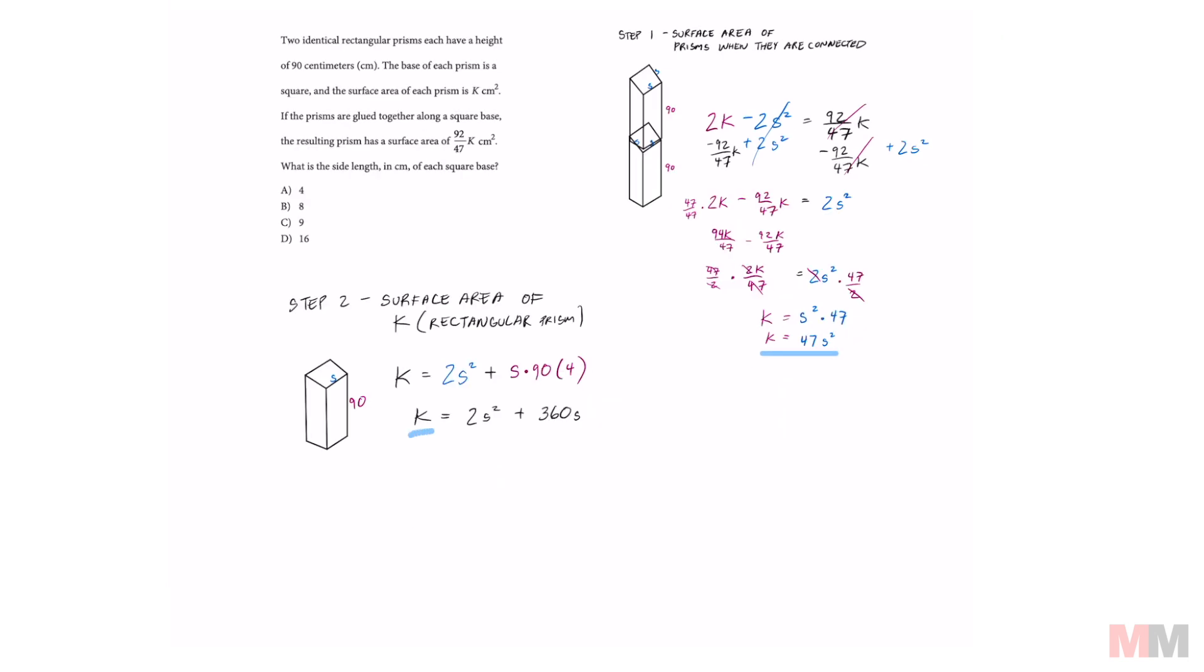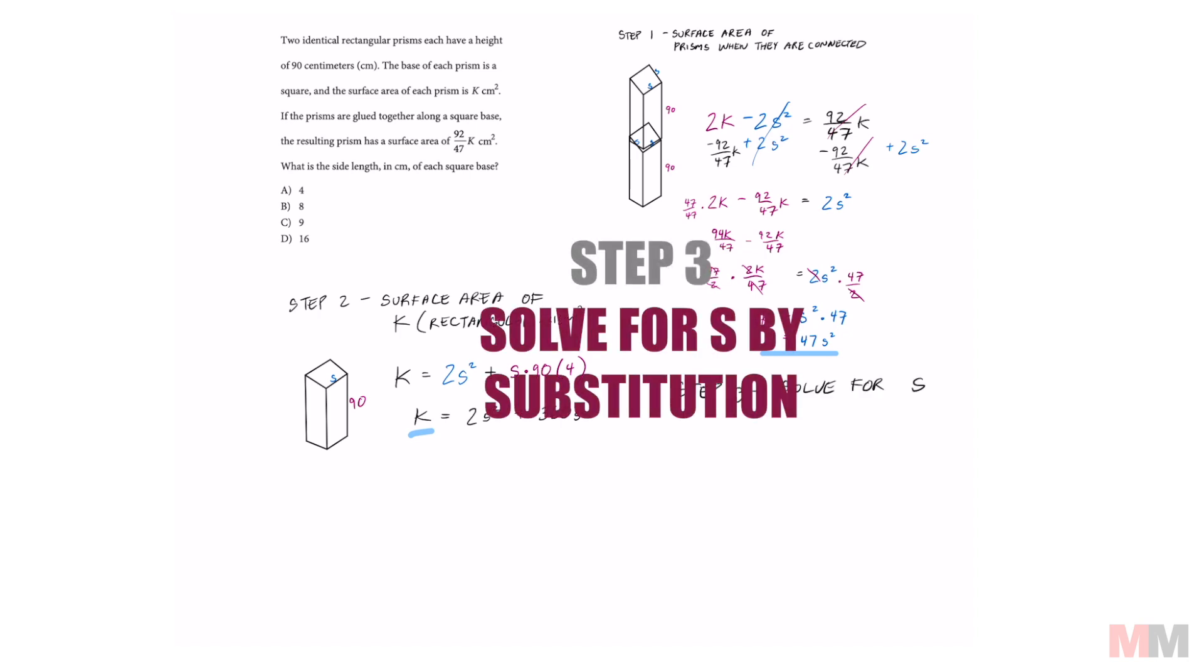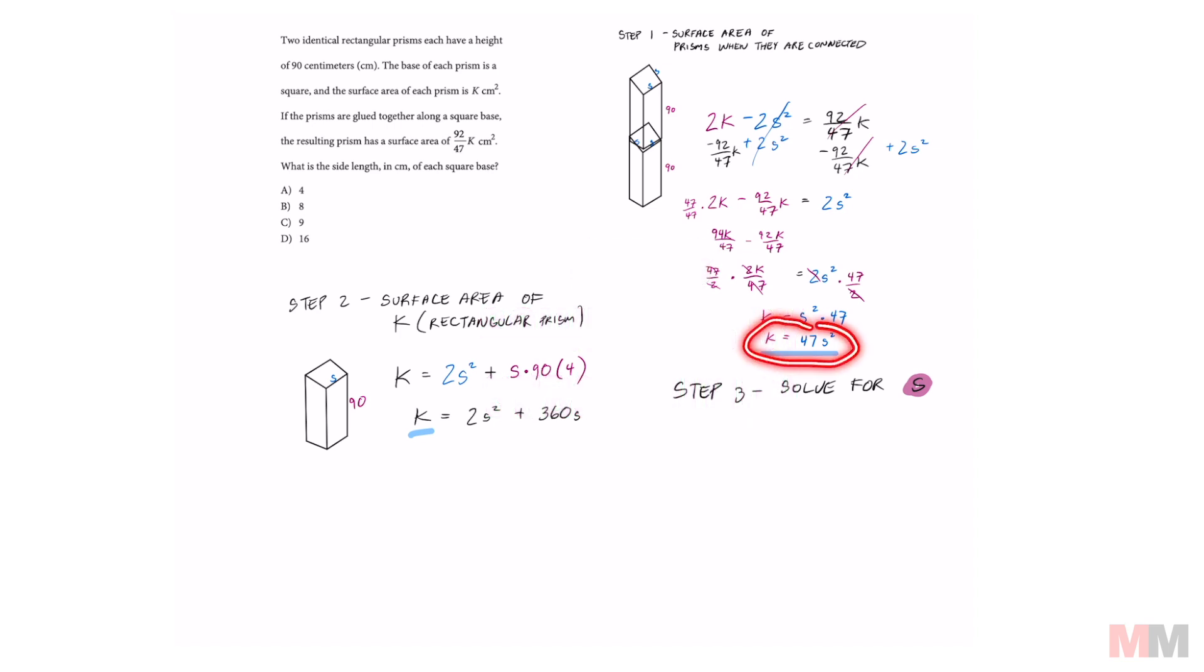So once I have this, we can move on to the last step, which is to solve for S. And we can solve for S by using substitution. In step one, we found K in terms of S, and we could use that to substitute it for this value of K in step two. That's going to be 47S squared to replace K, and that's going to equal 2S squared plus 360S.